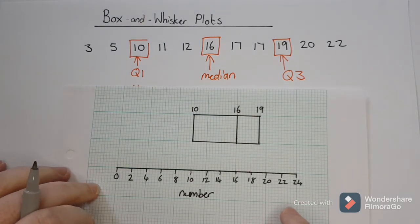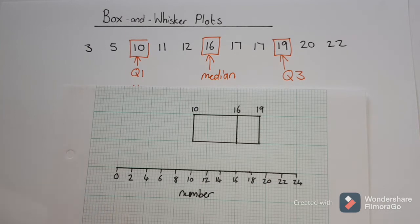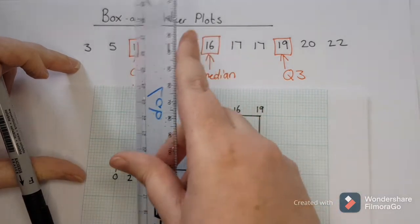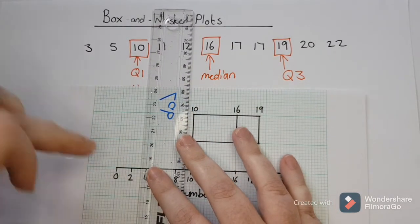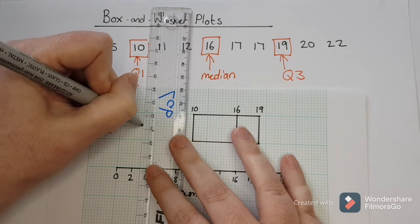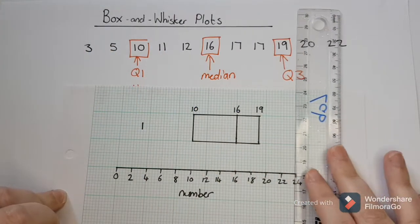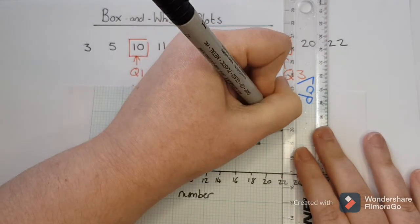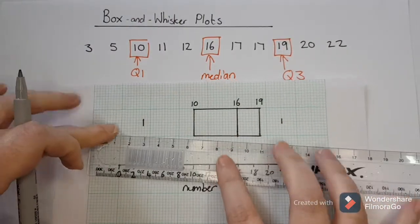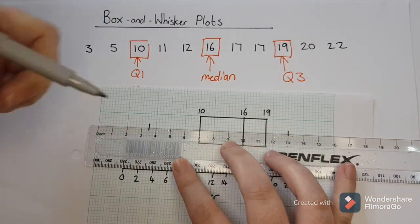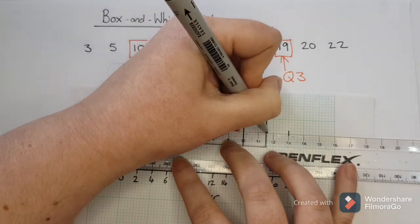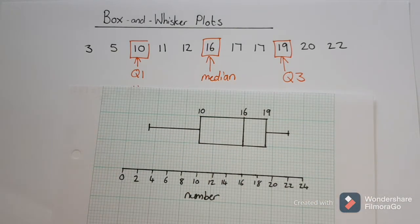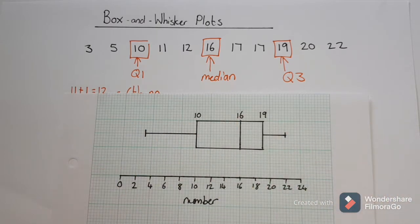Then we need to add the whiskers part of the box and whisker plot. The whiskers come from your lowest value and your highest value. So you find the lowest value, which is 3, and on your graph you draw a tiny little line. The highest value is 22, so at 22 I draw a tiny little line, and then going across in the middle of the box I connect my line to my box nice and neatly. I always use a ruler whenever I do a box and whisker plot.